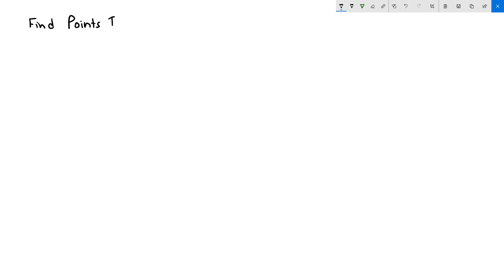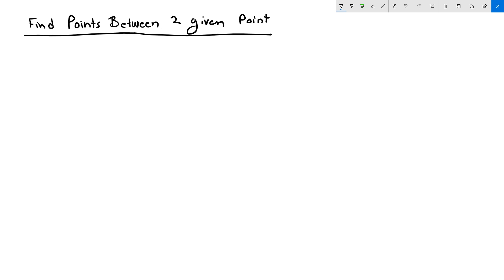In this video we will explain how to find all possible points between two given points. We will use a very common variation of the vector line equation, which has a lot of practical application in parametric design. Given two points Q and P, we want to use the parametric equation of a line to derive an equation that finds all possible points M between them.